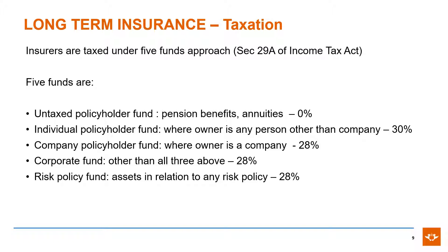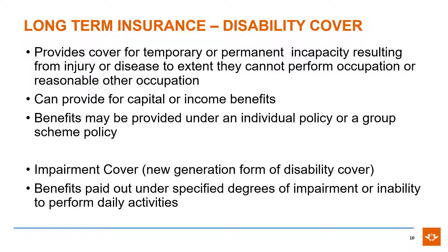Insurers are taxed under the five funds approach according to Section 29 of the Income Tax Act. The five funds are: the untaxed policyholder fund, taxed at 0%; the individual policyholder fund, taxed at 50%; the company policyholder fund, taxed at 28%; the corporate fund, taxed at 28%; and the risk policy fund, taxed at 28%.